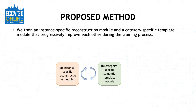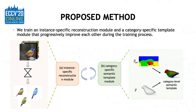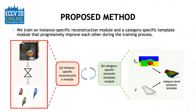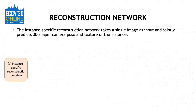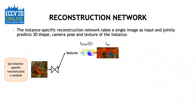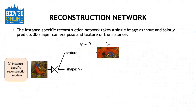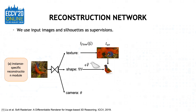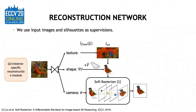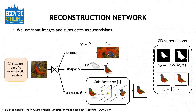The proposed method includes an instance-specific reconstruction module and a category-specific semantic template learning module. The input to the reconstruction module is a single-view image, while the output includes a UV texture map obtained by sampling the RGB image using a learned texture flow. The learned texture flow can also map other labels, such as part segmentations from the image space to the UV space. The reconstruction network also predicts a shape on top of a learned template, along with an estimated camera pose. Because we only have 2D images and silhouettes as supervision, we use a soft rasterizer to render the reconstructed meshes into images.